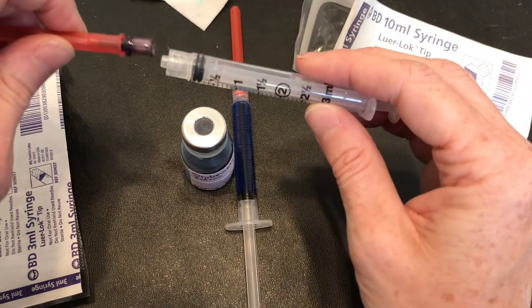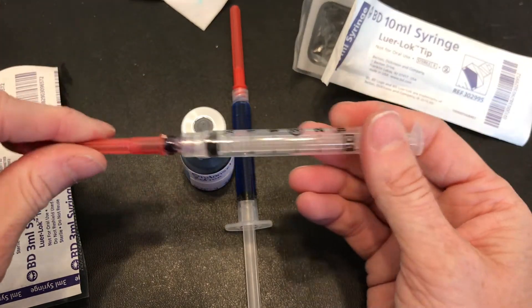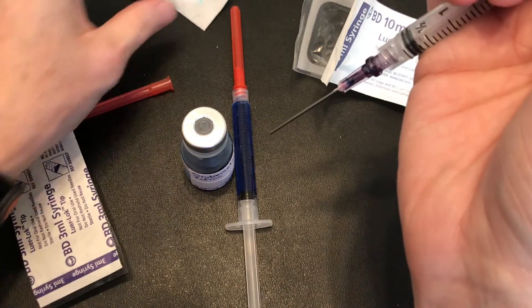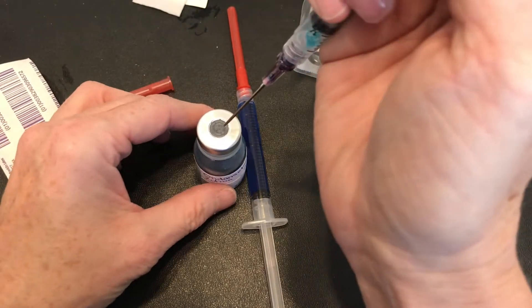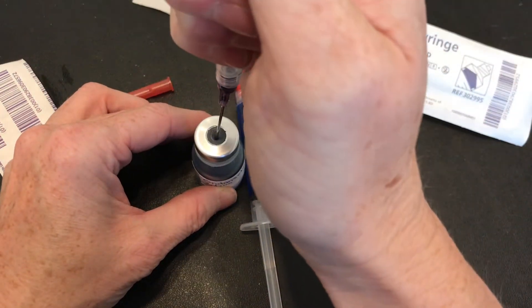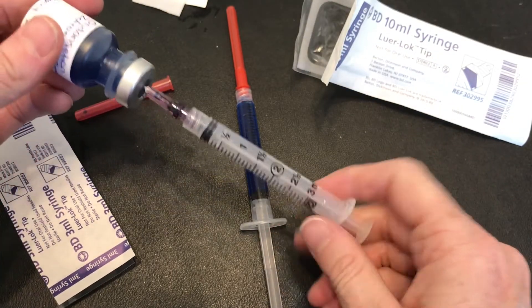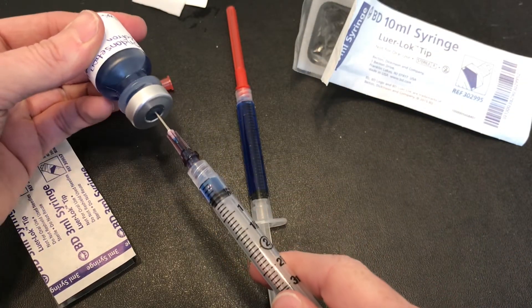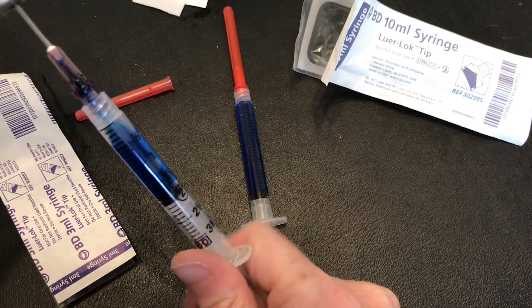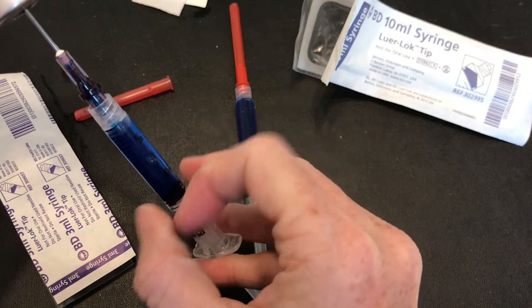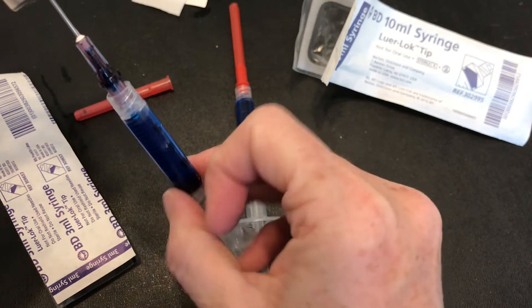Now I've just got that one non-filter so I'm just going to snap on here the second filter. Clean again in between. Draw up my air. And I want to pull up to 1.9 now. So I always like to go past. Get rid of the air bubbles.